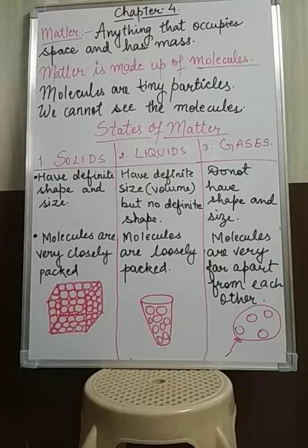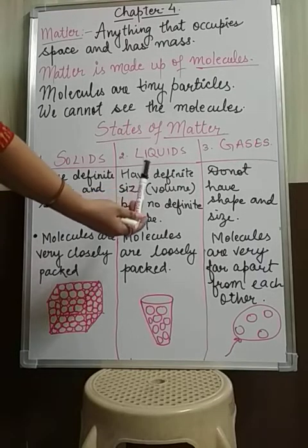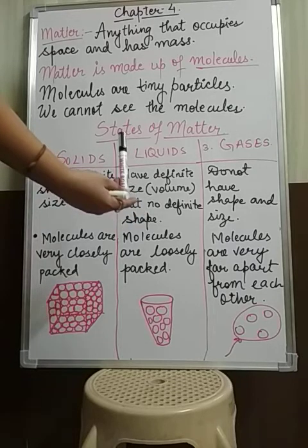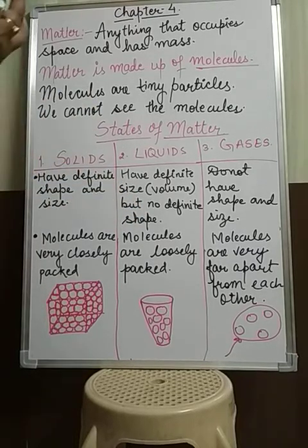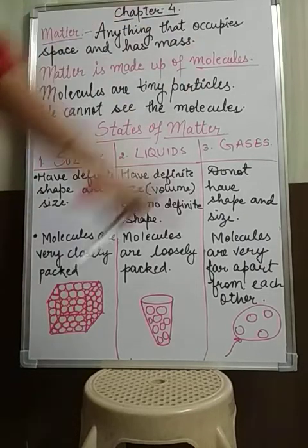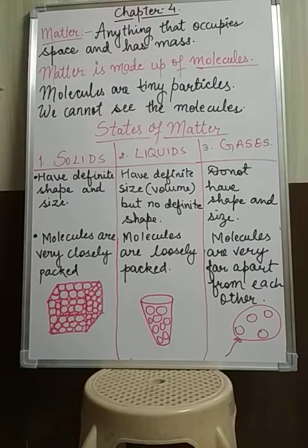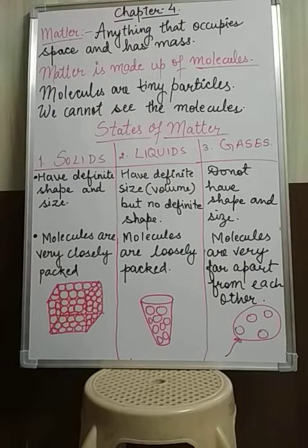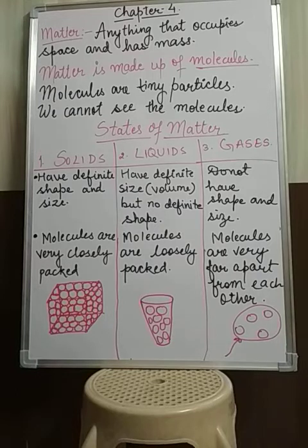Let us first learn about solids. You can see this marker in my hand — it is solid. It has a definite shape and size. When you see this board, it is also solid because it has a definite shape and size. When you see your notebooks, your pencils, your erasers, you can easily see that they have a particular shape and size of their own.